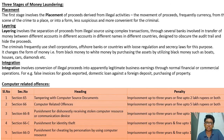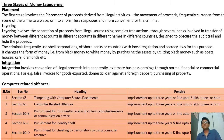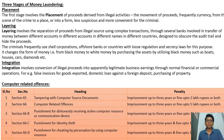Integration is the third stage of money laundering, involving the conversion of illegal proceeds into apparently legitimate business earnings through normal financial or commercial operations. Examples include false invoices for goods exported, domestic loans against a foreign deposit, and purchasing of property.